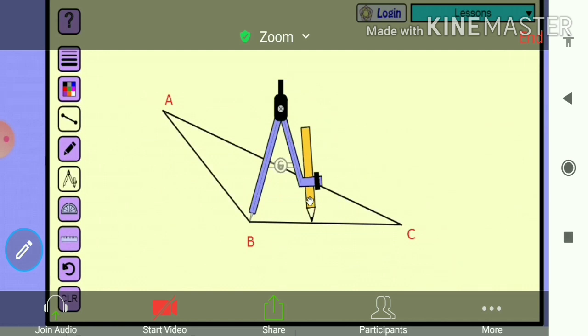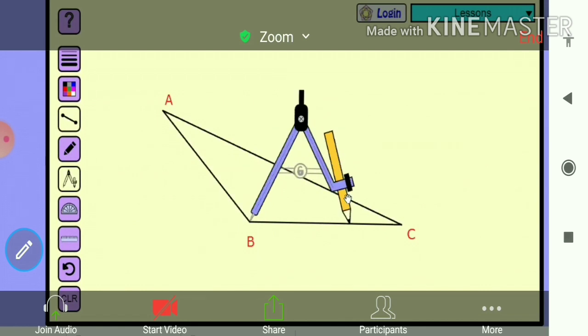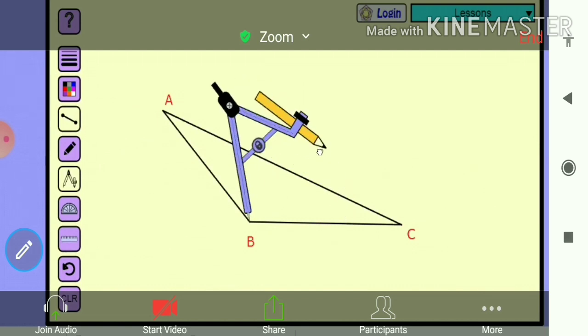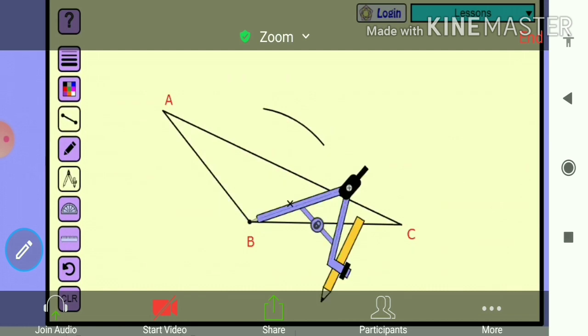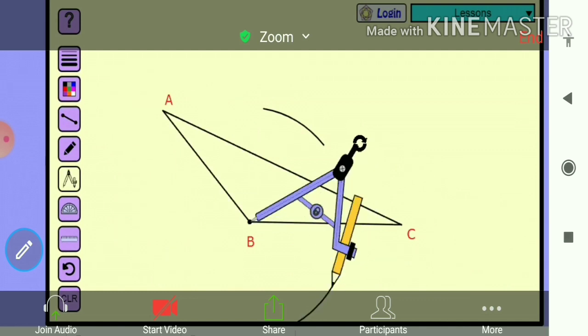For perpendicular bisector, you know that we are going to take more than half distance. Now I will fix that distance and now we are going to draw arc, one at upper side and other one at lower side. So you can see these are the two arcs.